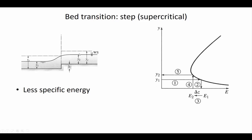The flow is still supercritical but the depth increased because of the step. The velocity decreased — because if the depth is larger, continuity requires the velocity to go down. Since Q1 = Q2 and the channel width is constant, if the depth gets deeper the cross-sectional area is larger, so the velocity has to go down. Otherwise continuity would be violated.